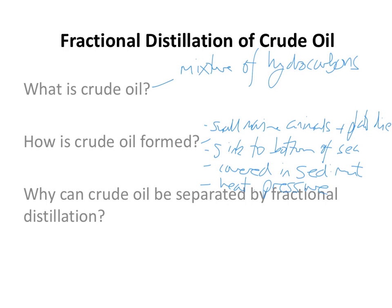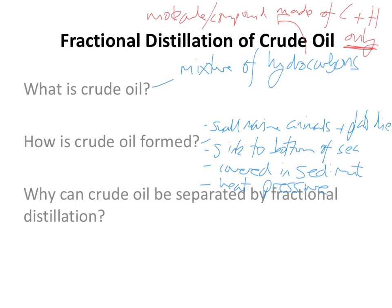From that definition springs another definition: what exactly is a hydrocarbon? A hydrocarbon is a molecule or compound made of carbon and hydrogen only. It's so important that you include the word 'only.' For example, ethanol has the formula C2H5OH, and ethanol is not a hydrocarbon because it's not only made up of carbon and hydrogen - it contains oxygen. Methane, CH4, is a hydrocarbon because it's only made up of carbon and hydrogen.